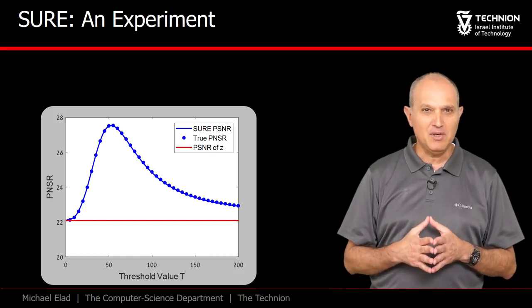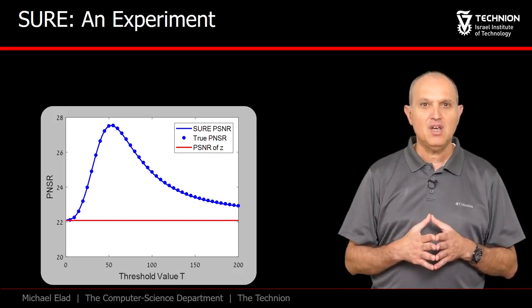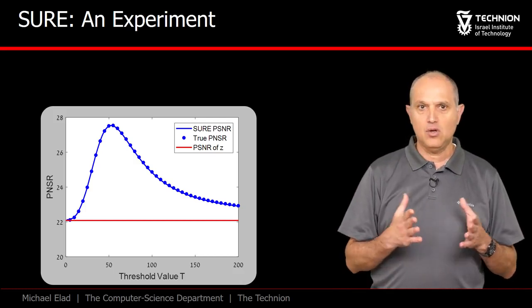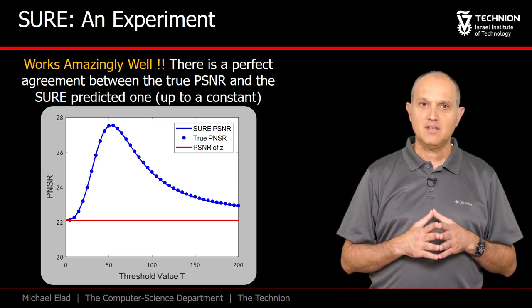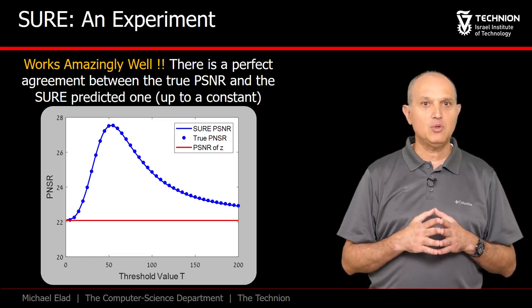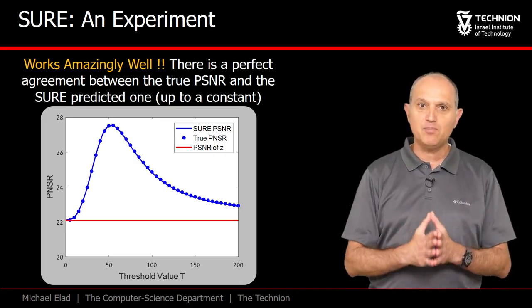Observe that we have cheated here a little bit, and added a constant so that the two curves are aligned. This has no consequence on the evaluation of T, but it looks great on the graph. So yes, there is a perfect alignment, and we could get exactly the T that gives the best performance.